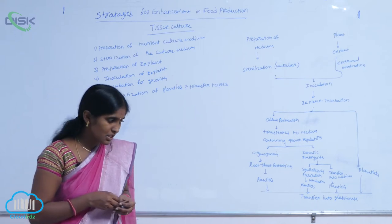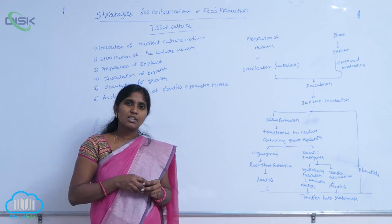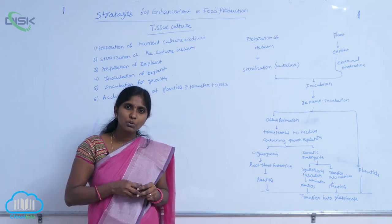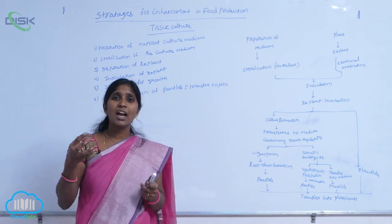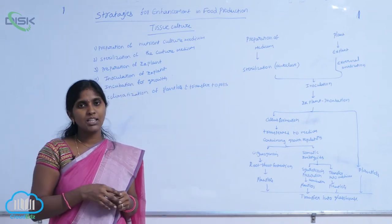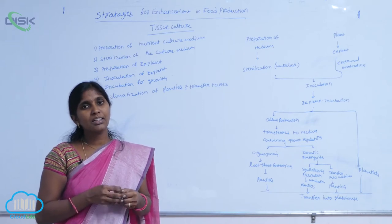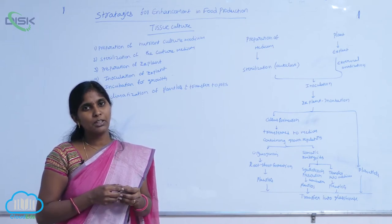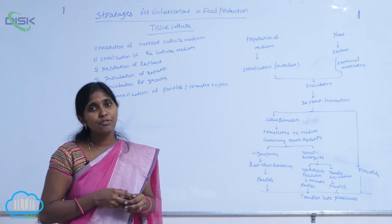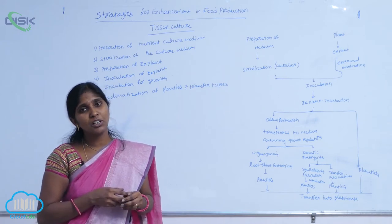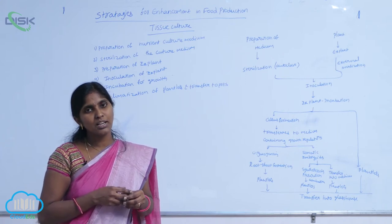For organogenesis, there is a need for plant growth regulators. When plant growth regulators are added to the basic medium, it turns into the complete medium. In the complete medium, the callus is differentiated into organs like roots and shoots.